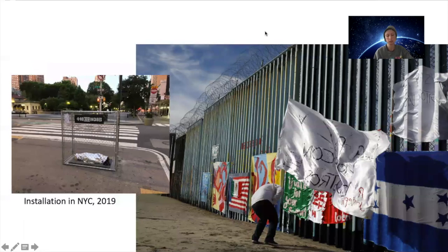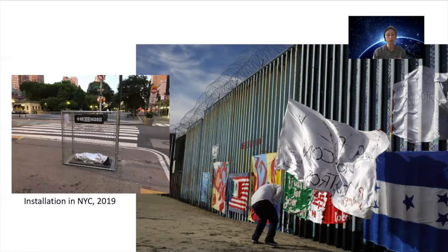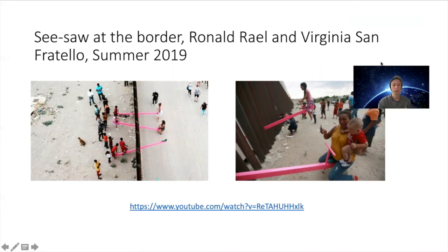Another cause that has provoked a lot of activist art in recent years has to do with immigration and the crisis at the southern border. This topic has really heated up since the 2016 election, as anti-immigrant rhetoric — especially anti-Mexican immigrant rhetoric — has been amplified. In response to the outrage over the Trump administration's detainment of children, we saw a lot of public art about this issue. However, we've also seen some more positive takes, as artists have found ways to use public art to bring people together at the border.